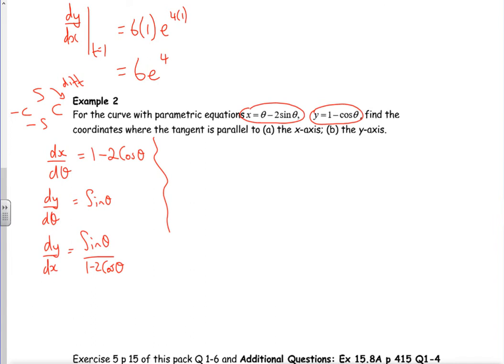Okay, also look at part a. So if it's parallel to the x-axis, if you imagine the line's going straight across, it's parallel to the x-axis, your gradient is zero. So I'm looking where dy/dx is zero. So I've got sine θ over one minus 2 cos θ is zero. If I multiply by the bottom, I've got sine θ is zero.